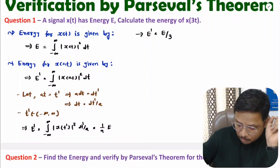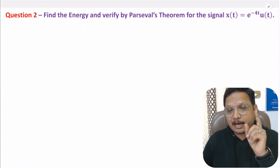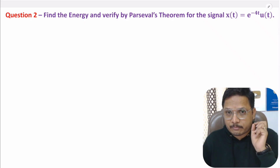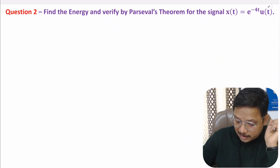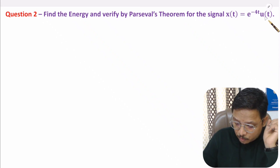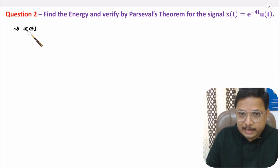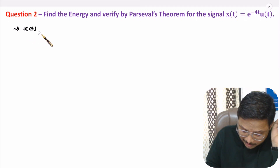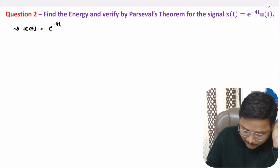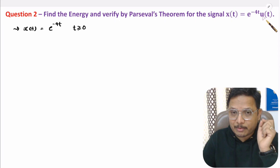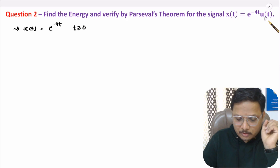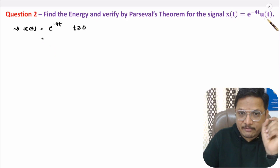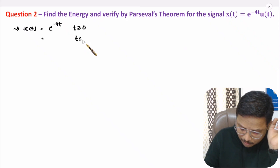Now I will solve one more example in which I will identify energy and verify it using Parseval's theorem. We need to identify the energy for x(t), where x(t) = e^(-4t)·u(t). I will represent this x(t) in terms of limits: x(t) = e^(-4t) for t ≥ 0, because multiplying by u(t) — the unit step function — gives value 1 for t ≥ 0, and u(t) has value 0 for t < 0, so the function is 0 for t < 0.